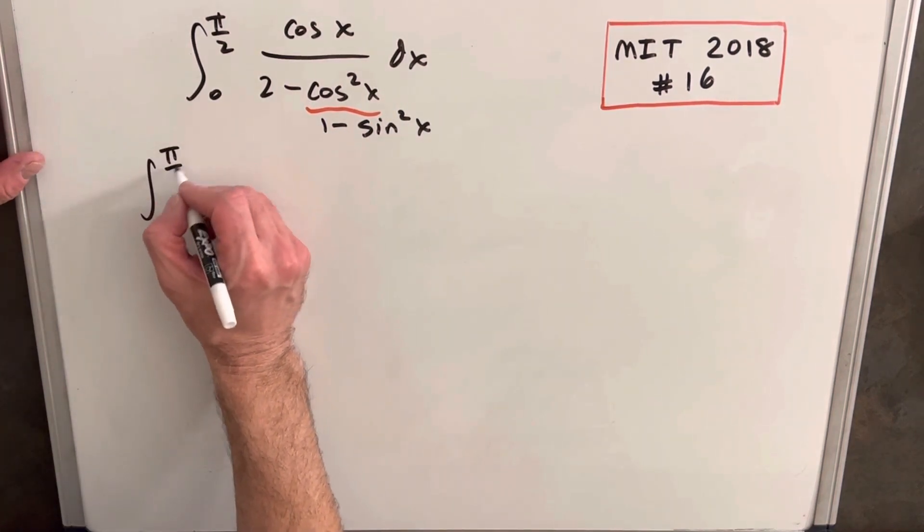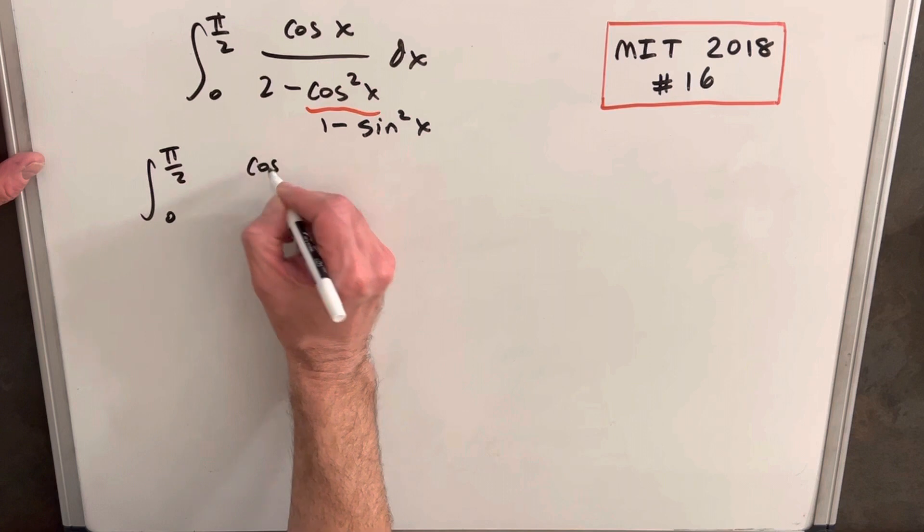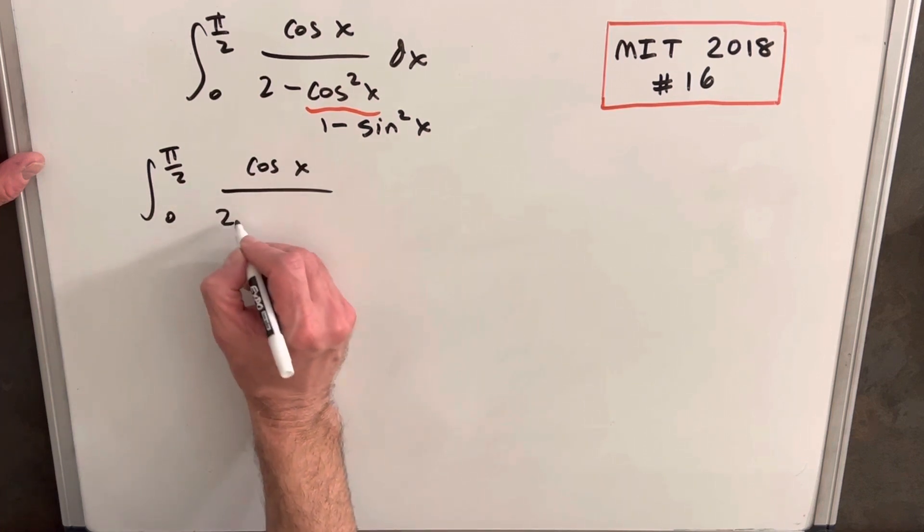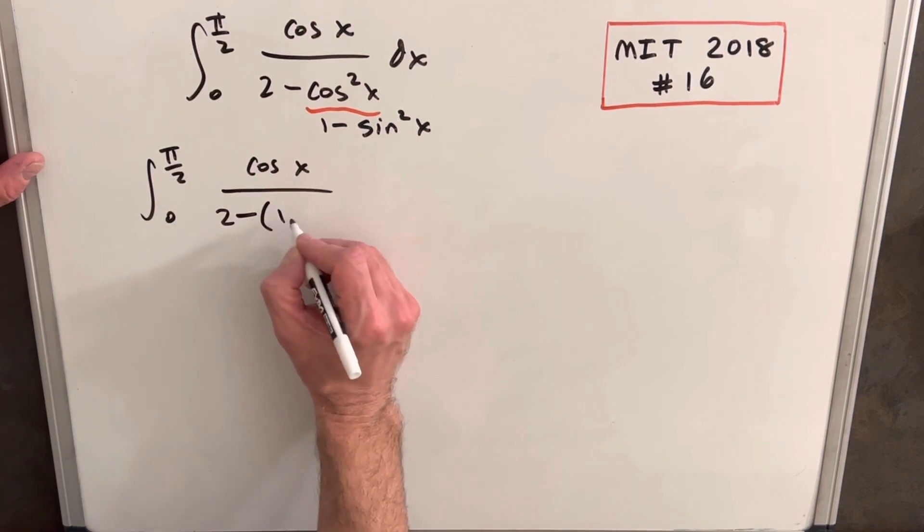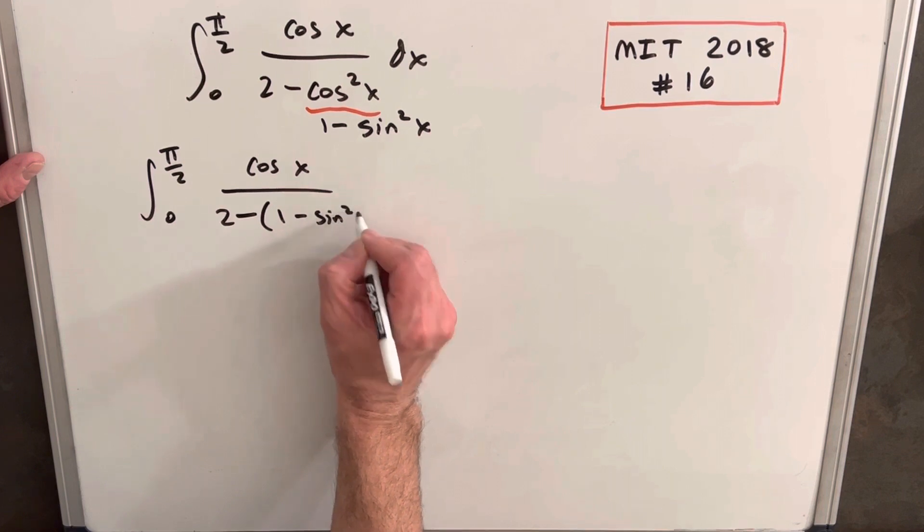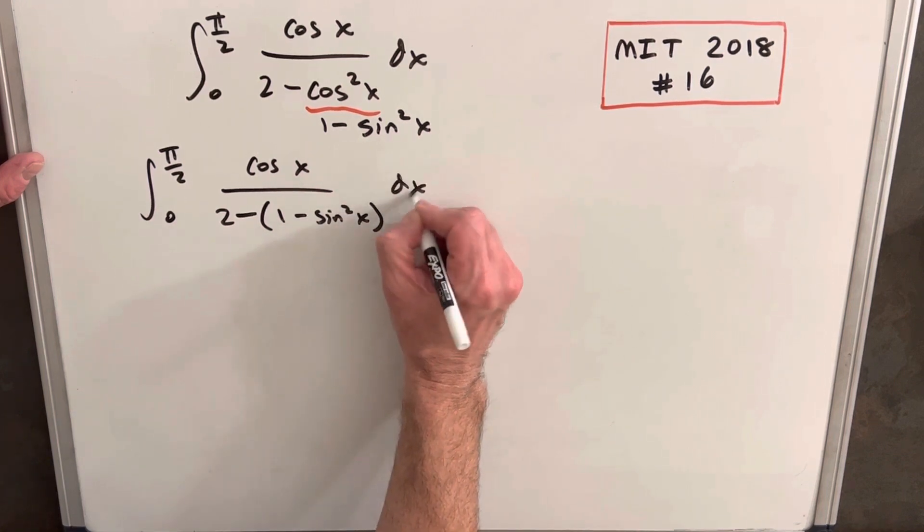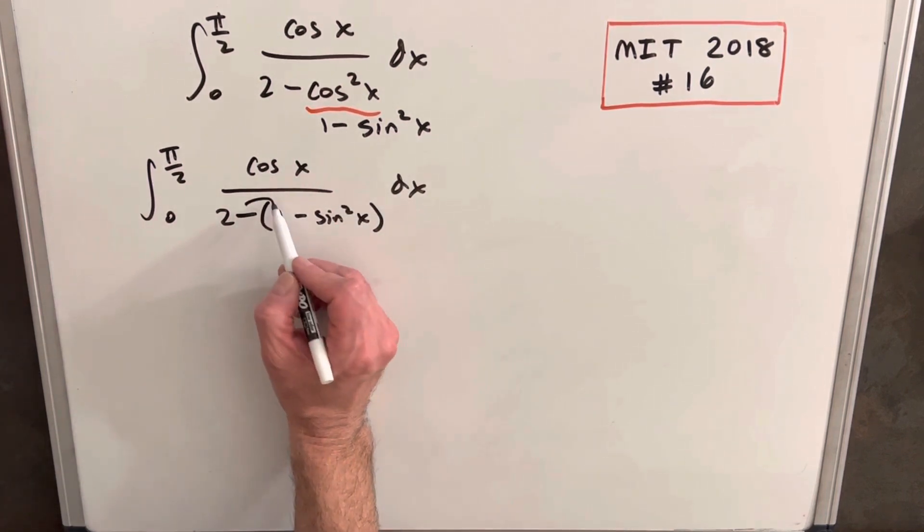Doing that we're going to have pi over 2 to 0, cosine x over 2 minus, just being careful that we don't mess up our signs. Okay, then distributing in this minus sign,